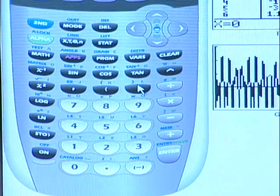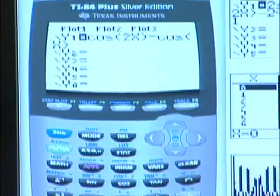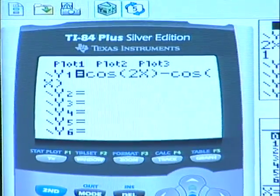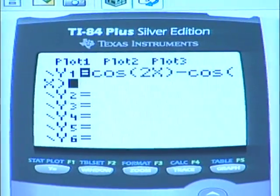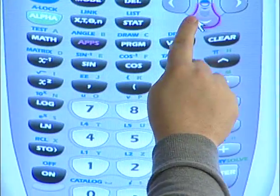First we enter the function as cos(2x) minus cos(x) and then we make sure that the angle mode is in degrees.